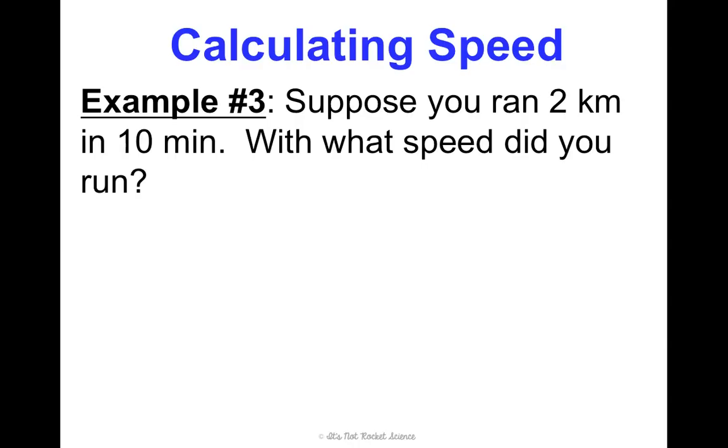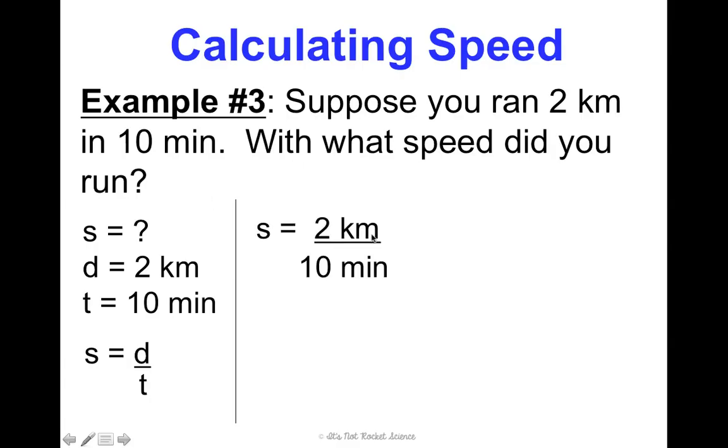Suppose you ran 2 kilometers in 10 minutes. With what speed did you run? Well, first, ask yourself, what am I looking for? I'm looking for speed. Well, what do I know? I know that 2 kilometers, that's a distance, and 10 minutes is a time. What tools do I have to help me? Well, I know that s equals d over t. So, what I'm looking for is already isolated by itself. So, I can just go ahead and plug in. So, I put 2 kilometers for d and then divided by 10 minutes for time. And 2 divided by 10 is 0.2. And again, my unit is my distance unit divided by my time unit. So, 0.2 kilometers per minute.